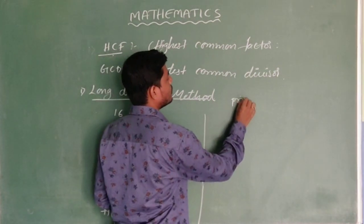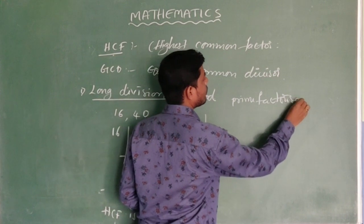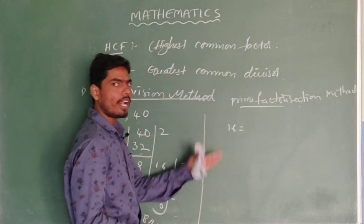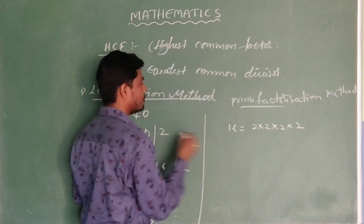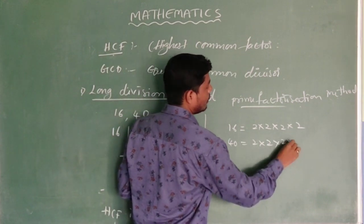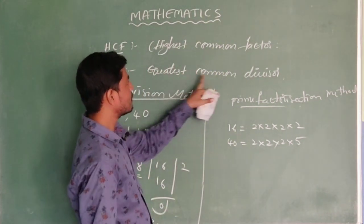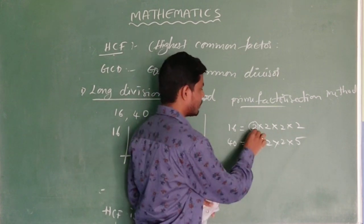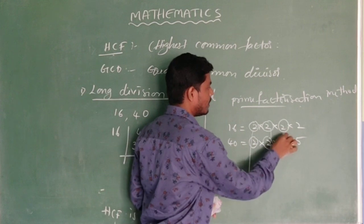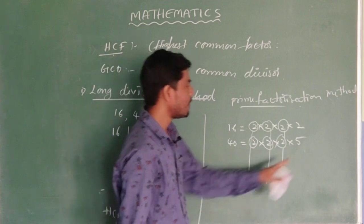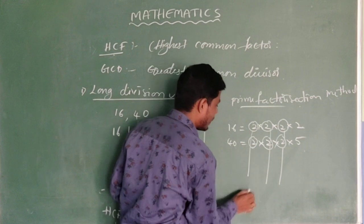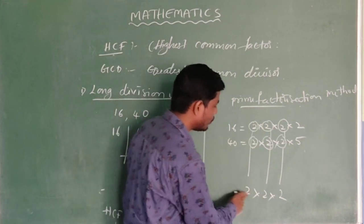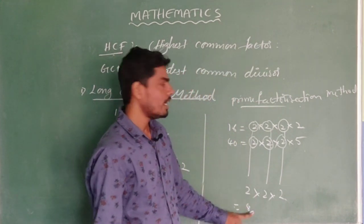Another method is the Prime Factorization method. Take 16: its prime factorization is 2 × 2 × 2 × 2. Next for 40: it is 2 × 2 × 2 × 5. Now find the Greatest Common Divisor — that means the common factors that appear in both numbers. 2 is common, another 2 is common, and one more 2 is common — three 2s are common in both prime factorizations. That means 2 × 2 × 2 = 8. The required HCF is 8 for the given two numbers.